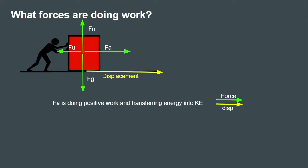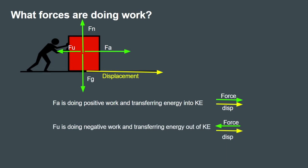Force friction is pointed in the opposite direction to displacement, so the angle between them is 180°. Cosine of 180° equals negative one, meaning force friction is doing negative work — transferring energy out of kinetic energy. Force normal and force gravity are both perpendicular to displacement, meaning they create a 90° angle.